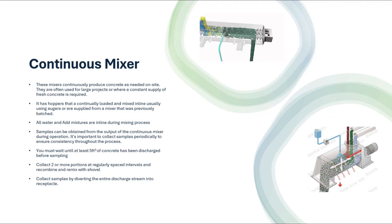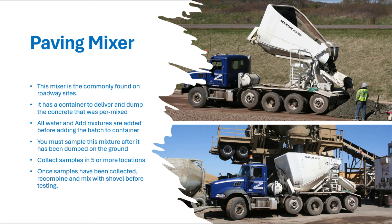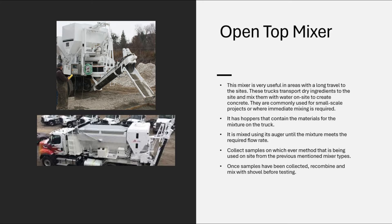Be sure all water and additives are added before sampling. Use a receptacle that is clean and damp. Sample from at least two locations from the mid portion of the batch at regularly spaced intervals. Divert the concrete by moving the receptacle through the entire flow of the concrete or by diverting with a shovel. The total portion should equal at least one cubic foot (28 liters). This should take no more than 15 minutes from the time you take your first portion to your last portion.